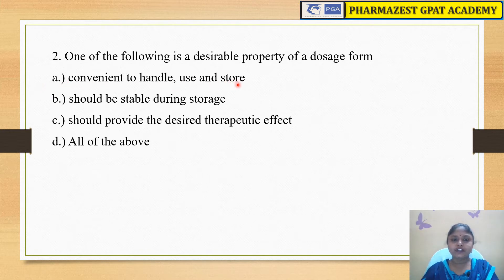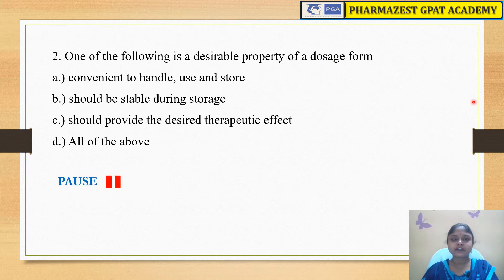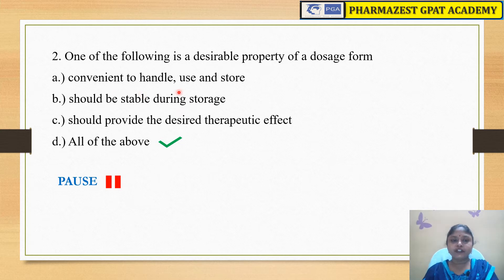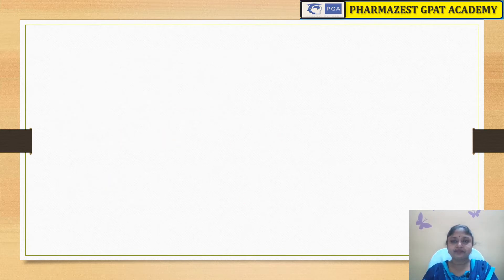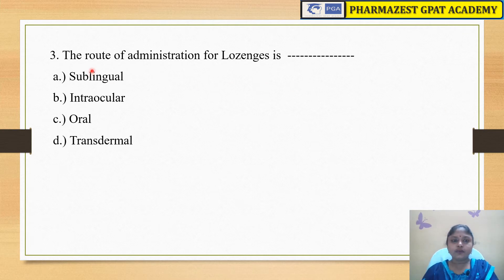The next question is: one of the following is a desirable property of a dosage form. The options are A) convenient to handle, use and store, B) should be stable during storage, C) should provide the desired therapeutic effect, and D) all of the above. The answer is D, all of the above. A dosage form should be convenient to handle, use and store; it should be stable during its storage period; and it should provide the desired therapeutic effect.